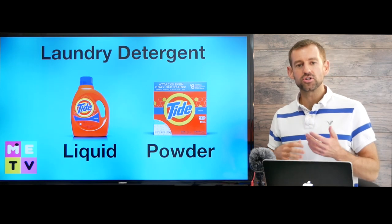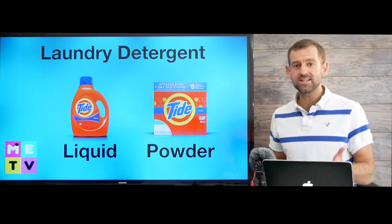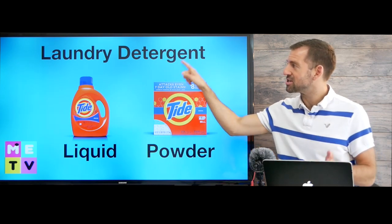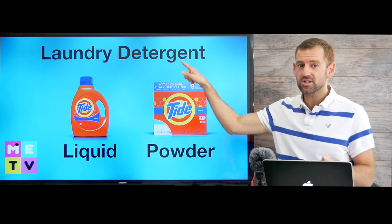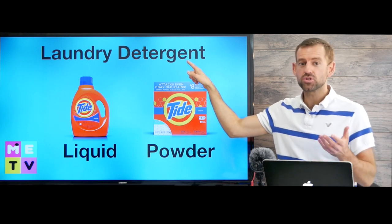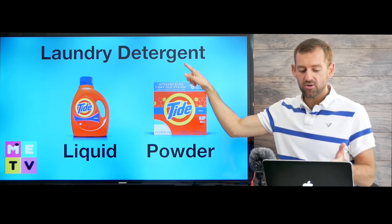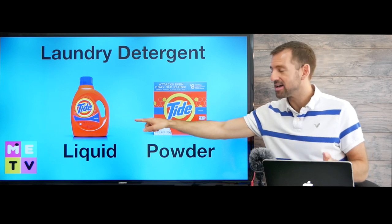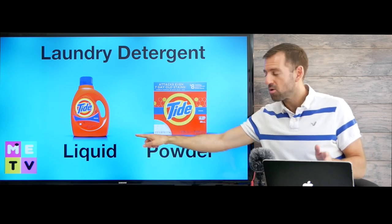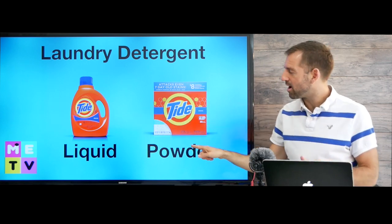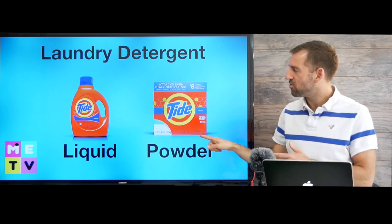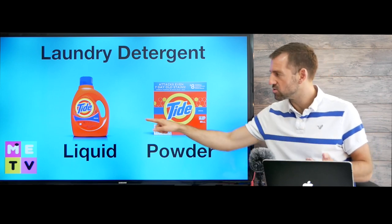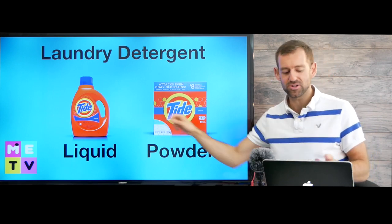To do your laundry you're going to need some laundry detergent. The word detergent means soap. Now you have two options — you can buy liquid detergent or you can buy powder detergent. Personally I use liquid detergent.